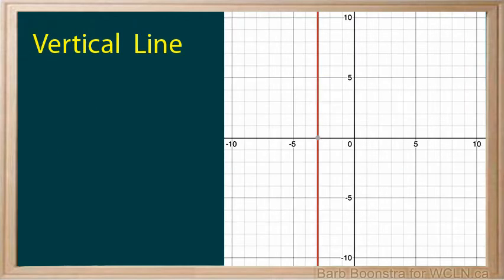A vertical line is one that is parallel to the y-axis. Let's put three points on the line: negative 3, 6; negative 3, 2; and negative 3, 5.